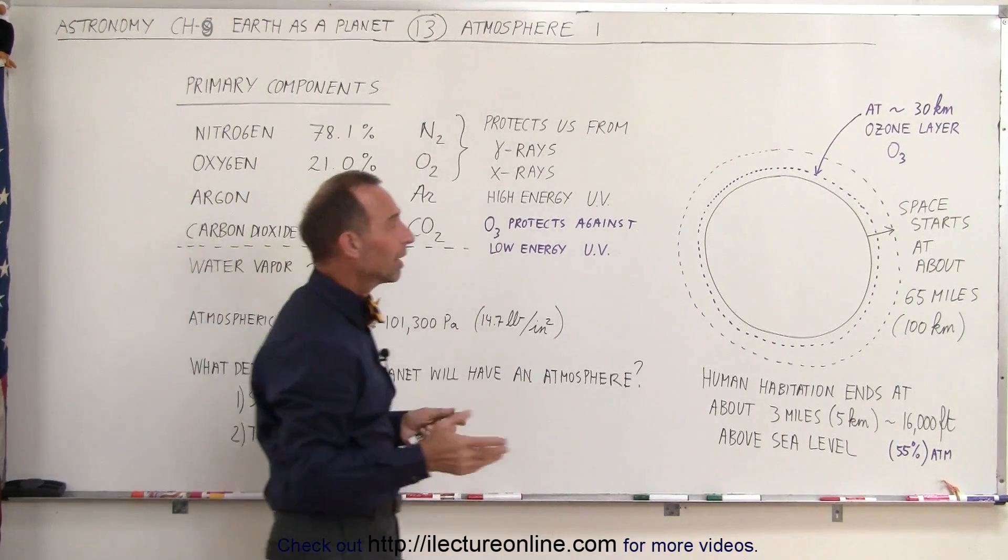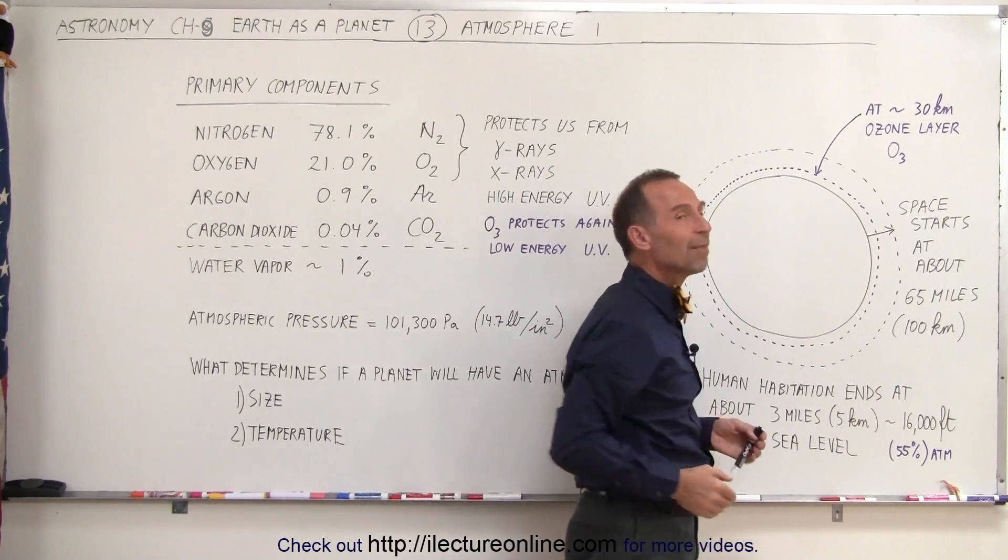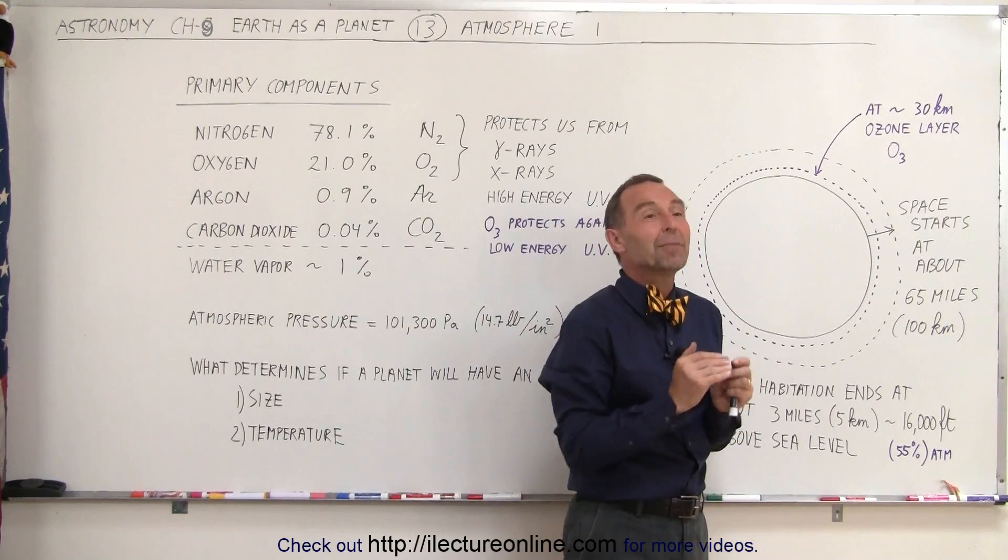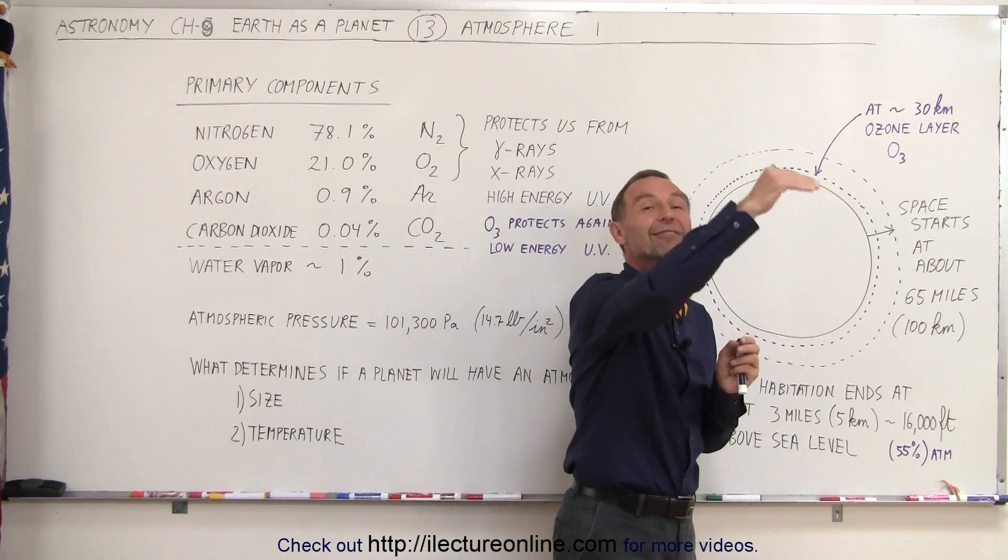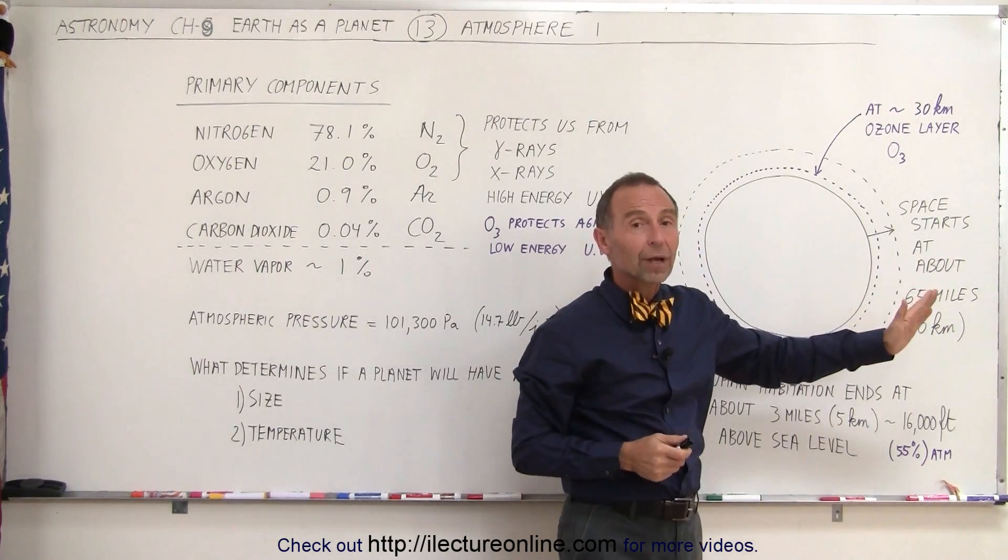Let's take a look here on our diagram. Notice that space starts at about 65 miles above the surface of the Earth, which is about 100 kilometers. Whenever they do space travel, they mean they've made it to a height of at least 65 miles or above.